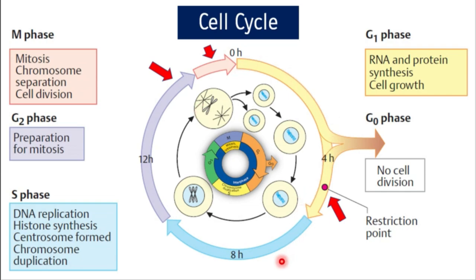G1 phase and G2 phase are the gaps between the synthesis phase and mitotic phase, during which most cell growth takes place. In multicellular organisms, some terminally differentiated cells stop dividing — like neurons — and arrest in G0 phase. After that point in G1, the cells will stop dividing, becoming terminally differentiated, with no cell division thereafter.